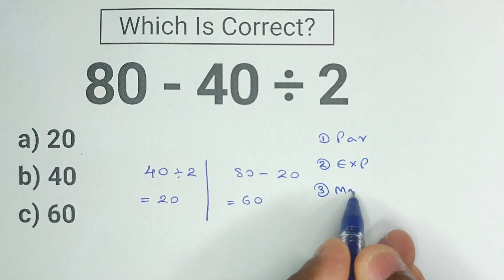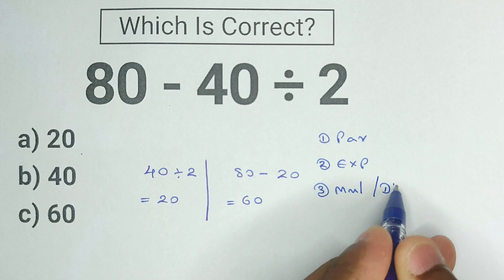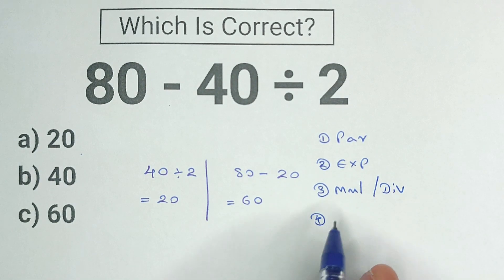And the third of our order of operations is multiplying and dividing. And after you multiply and divide, our fourth order of operation is adding and subtracting.